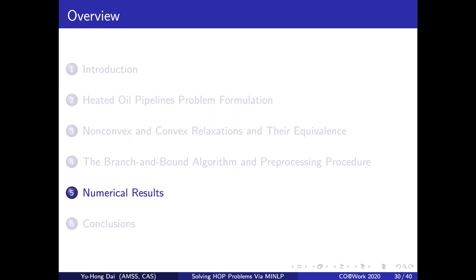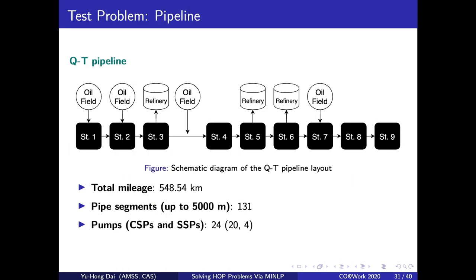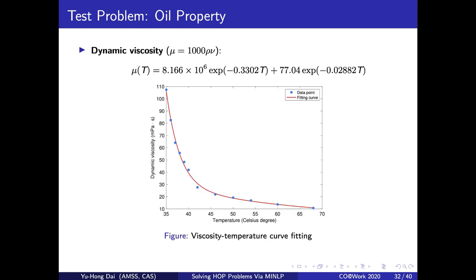Next, I will show you a real case study of our HOPBB method. We implement the HOPBB method on a real HOP in China called QT pipeline. There are nine heating stations and multiple import and output points located in the pipeline. The total mileage is over 548 km. The pipe between each two stations is divided into segments no longer than 5 km and there are 131 segments in total. The total number of constant speed pumps and shifted speed pumps are 20 and 4 respectively. For the viscosity of the oil, we fit a convex and monotonically decreasing curve on the data points. As you can see in the figure, the viscosity is dramatically high when the temperature is lower than 40 Celsius degree.